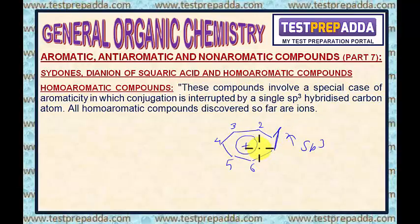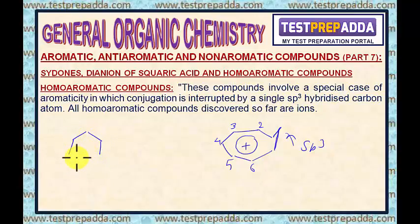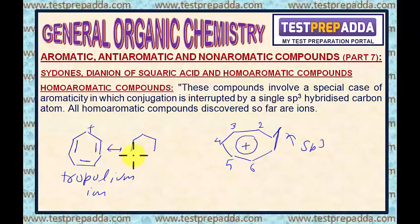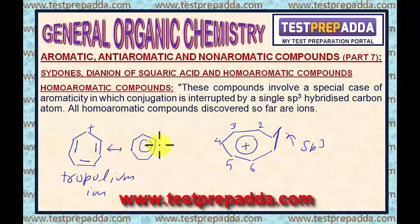Many spectroscopic and magnetic properties are associated with this compound. If I draw a 7-membered ring with double bonds here, double bond here, double bond here — this is the Tropolium Ion. And here you can see this is the resonance hybrid, with continuous overlap of p orbitals.